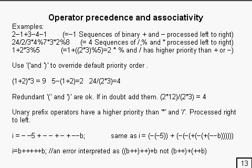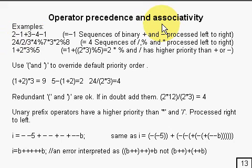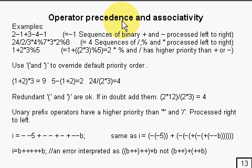When you've got a lot of operators together, it's important to know how to process them. Associativity means whether they're processed from left to right or right to left, and precedence controls what gets done first. I'll give you an example of that and make it clear.